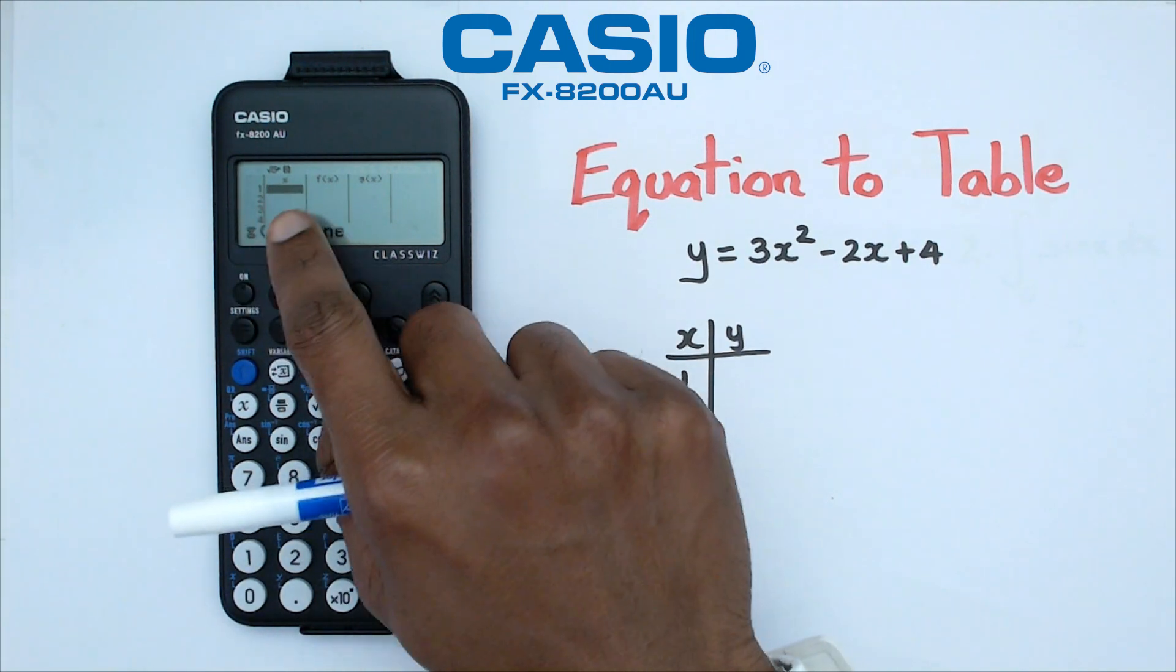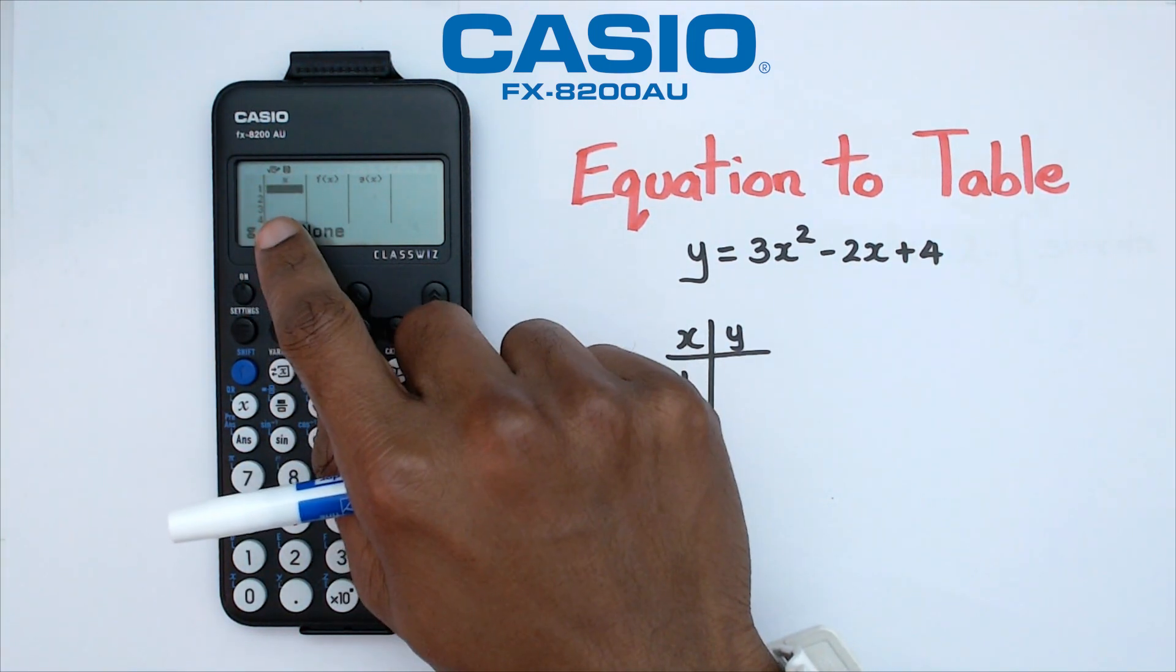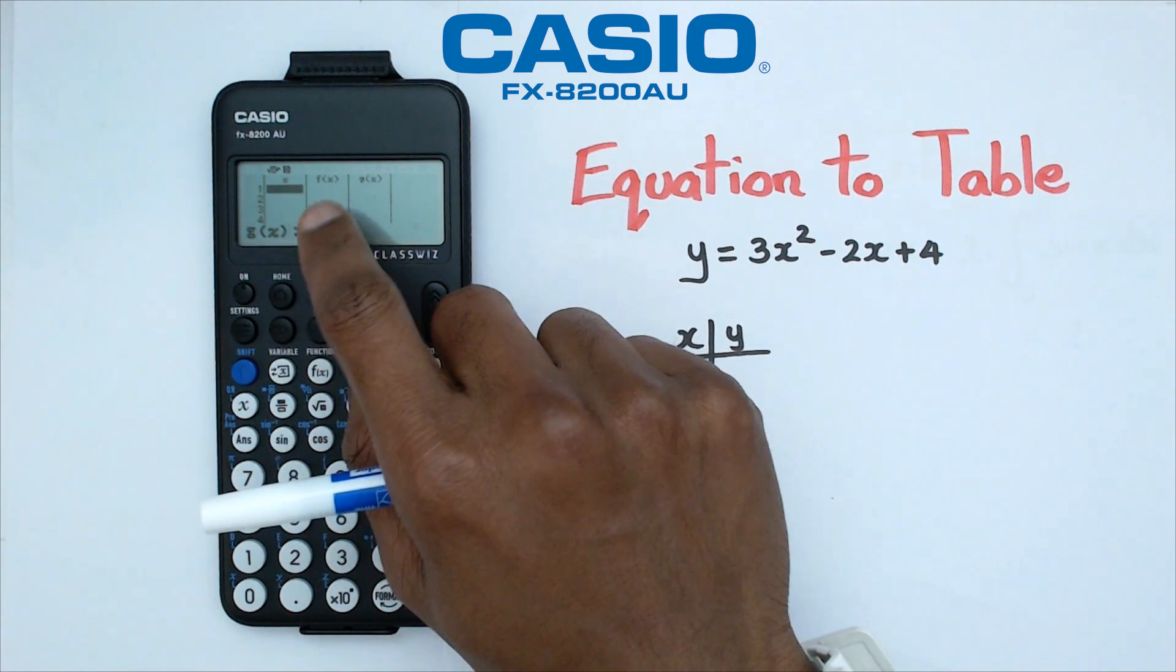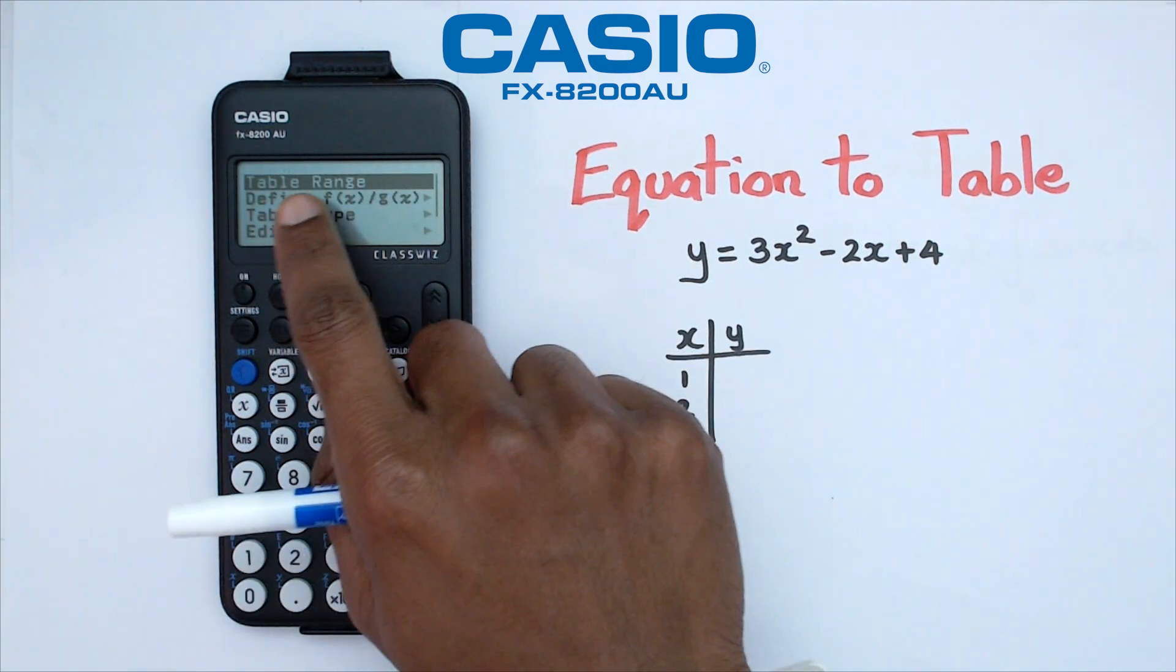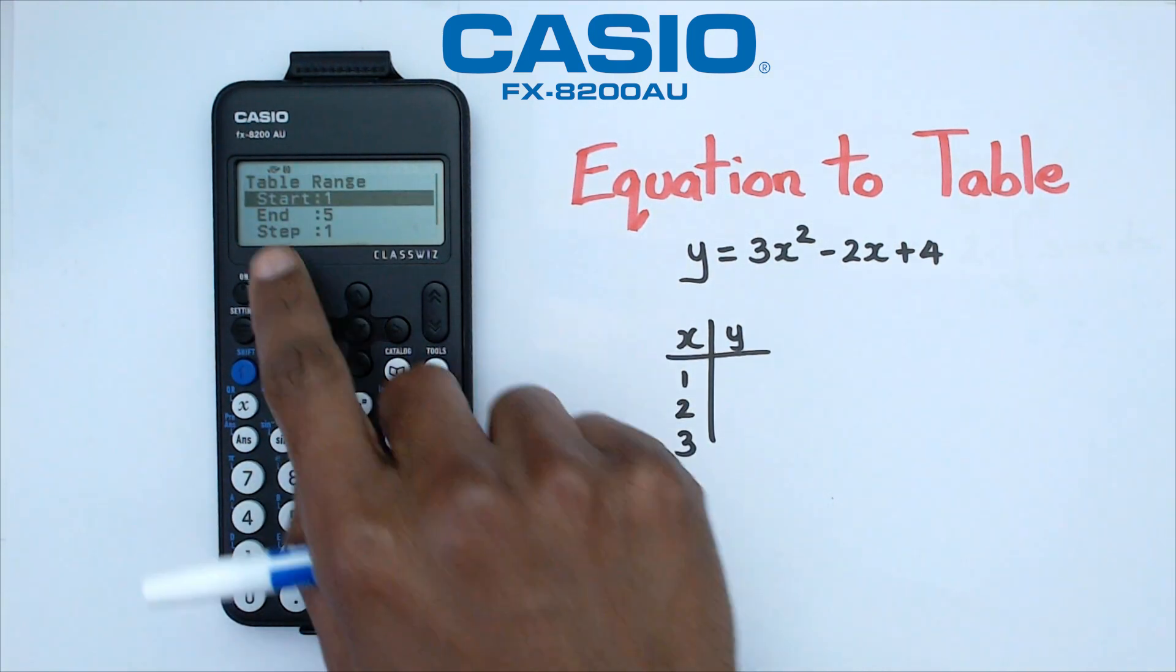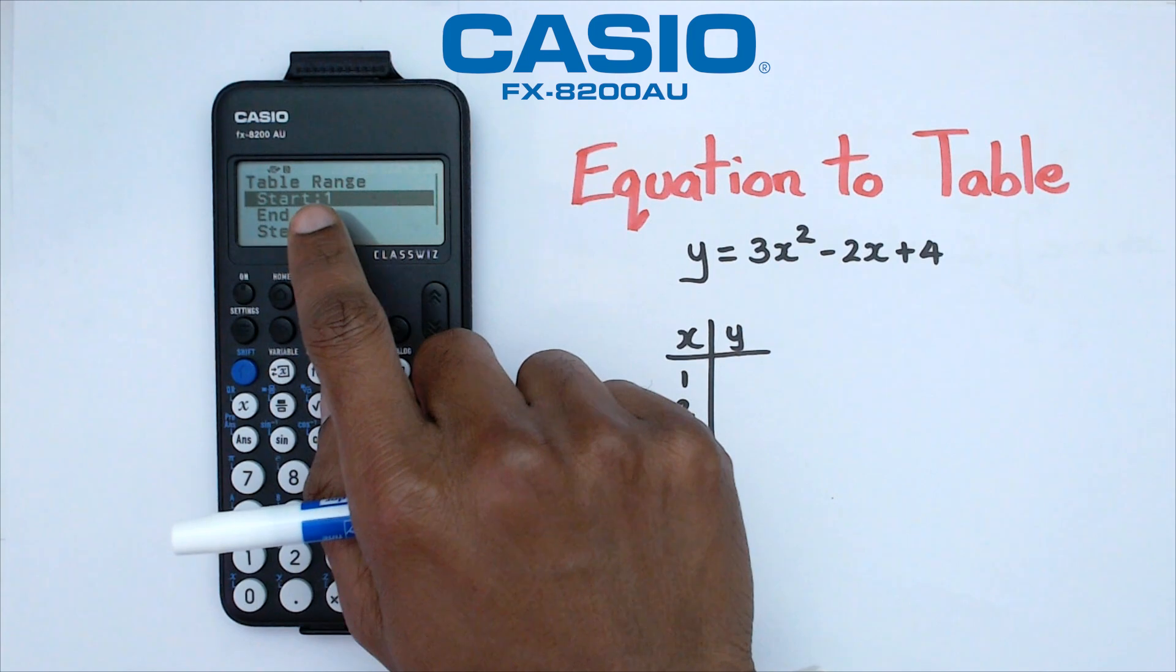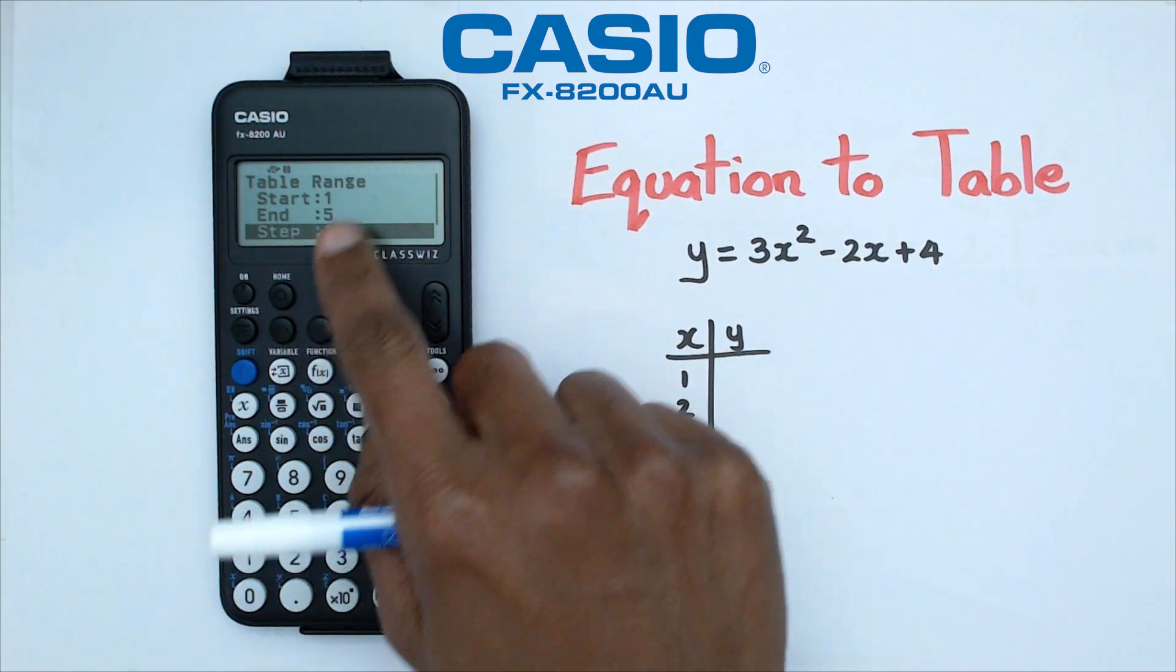Now, as you can see, the tables are actually empty here. What we want to do is we want to have a set of x values, and then f(x) to actually be spit out. So we're going to click on tools, and as you can see right now, there's a button called table range. We're going to click on table range, and we want this table to start from 1, and we want this to finish at 5, and we're going to go up in one step.